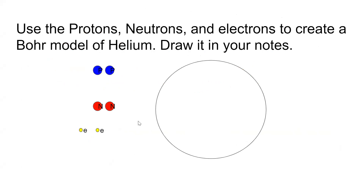Here in the slide I ask you to build a Bohr model of helium. I know it's helium because there are two protons — it doesn't matter how many neutrons or electrons, if it has two protons it's helium.